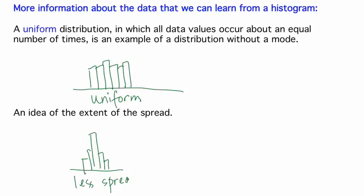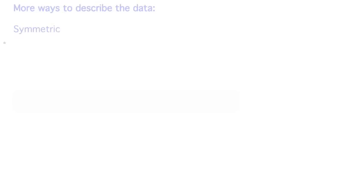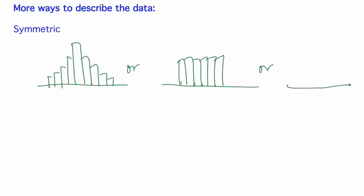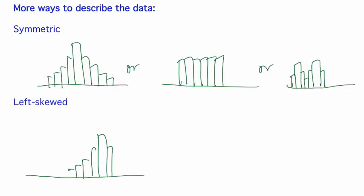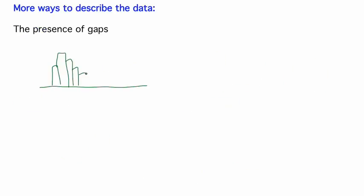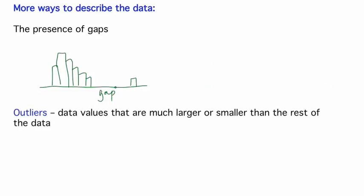From a histogram, we can also get an idea of the extent of spread in the data. We can also see the extent of symmetry in the distribution of the data. Histograms can be symmetric, which can be the case in unimodal distributions, distributions without a mode, or multimodal distributions. Left, or negatively skewed, meaning it has a long left tail. Right, or positively skewed, meaning it has a long right tail. We can also see deviations from the overall pattern, such as gaps in the data. Outliers are data values that are separated from the rest of the data because they are much larger or much smaller.